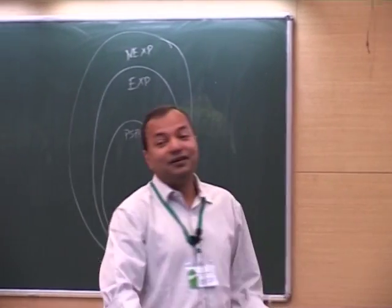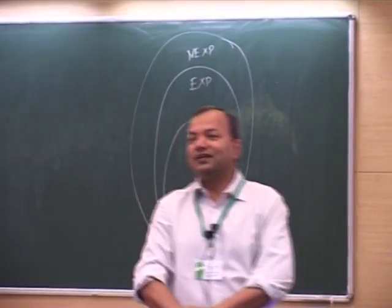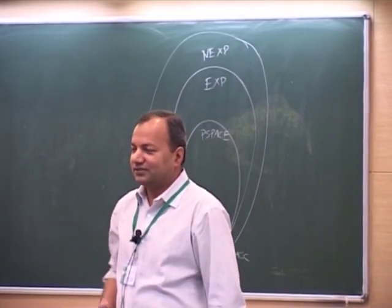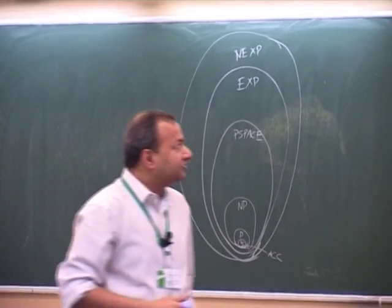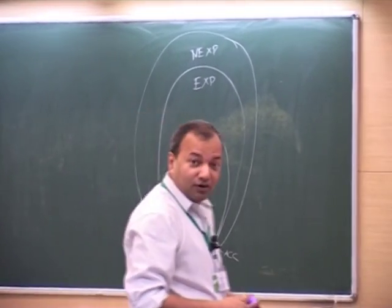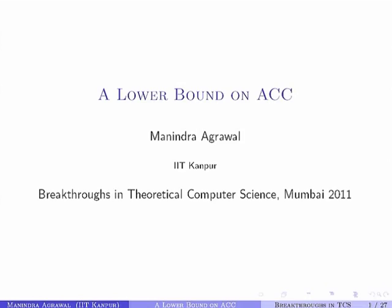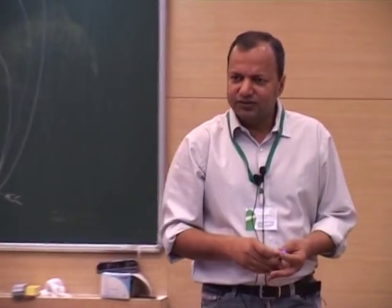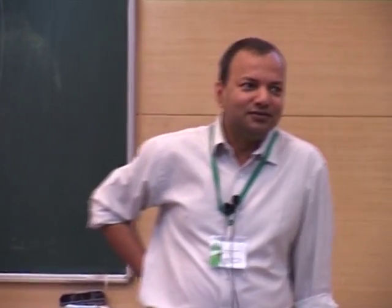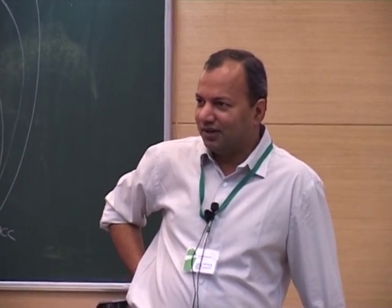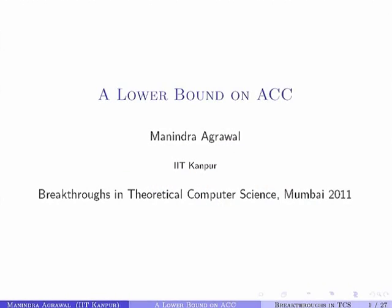I will come back to this diagram in a while. This is a recent result by Ryan Williams which I will talk about. It shows a lower bound on the class ACC. It's a fairly simple result in hindsight. It took quite a while for even this result to be proven, so clearly it was not obvious at all in the beginning.